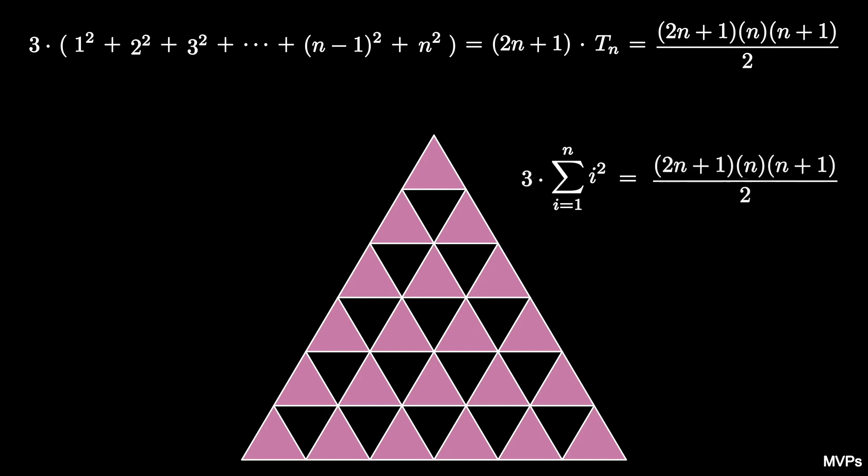Dividing both sides by 3 gives the formula for the sum of the first n-squares to be equal to 2n plus 1 times n times n plus 1 over 6.